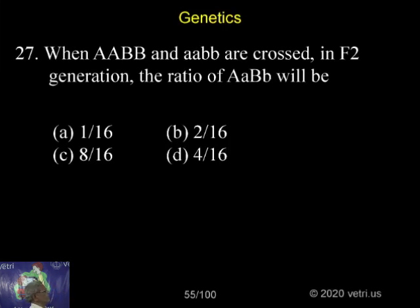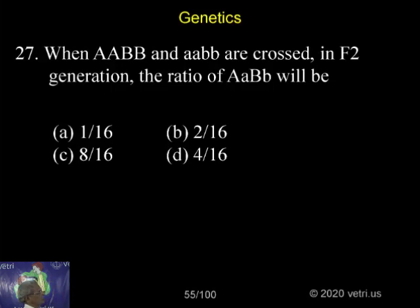When capital AABB and small aabb are crossed, in the F2 generation the ratio of AaBb — that is capital A small a, capital B small b — will be what? The parental generation crosses to give F1 generation with capital A small a and capital B small b, and in the F2 generation, capital A small a capital B small b will appear in what ratio? That's the question.